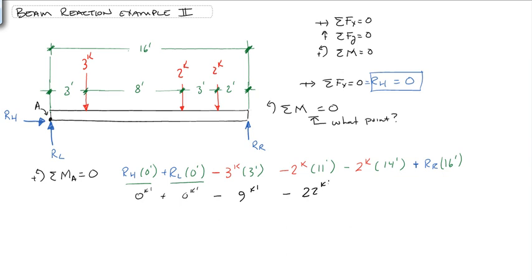So let's do the math here. We get minus 9 kip feet, minus 22 kip feet, minus 28 kip feet, plus 16 times RR. And that has to all sum to 0.